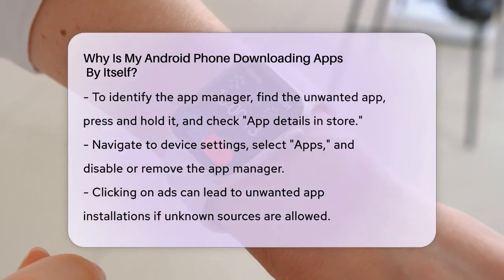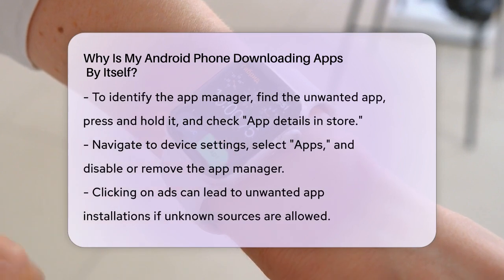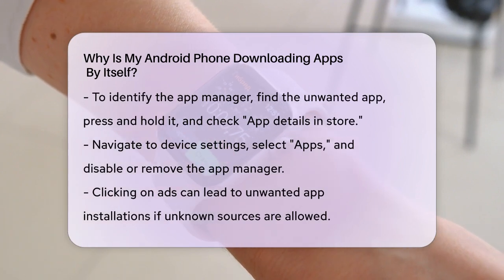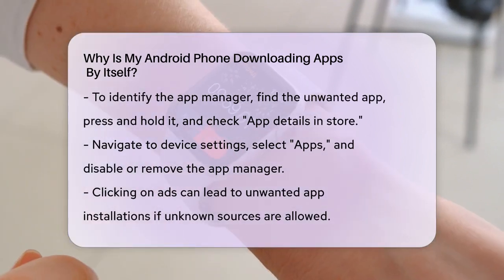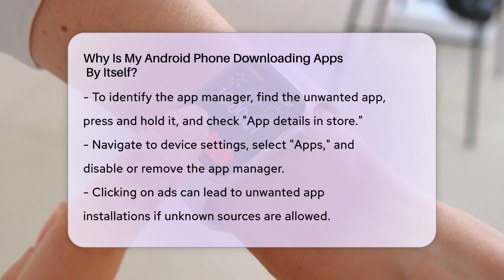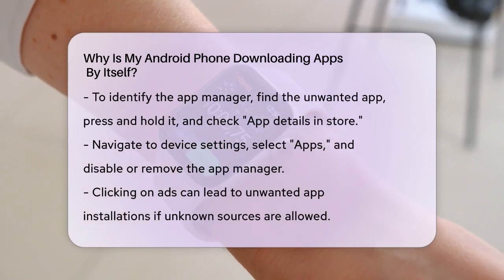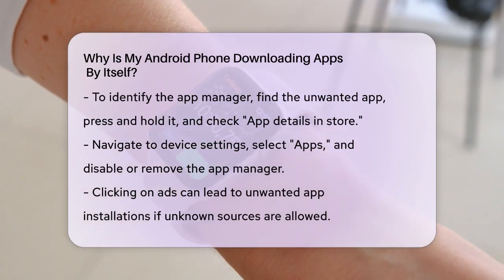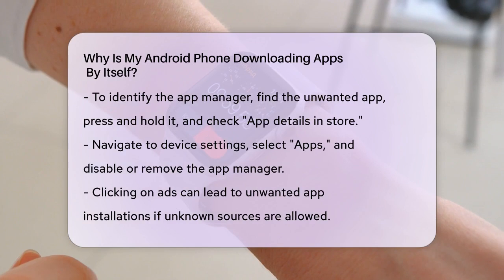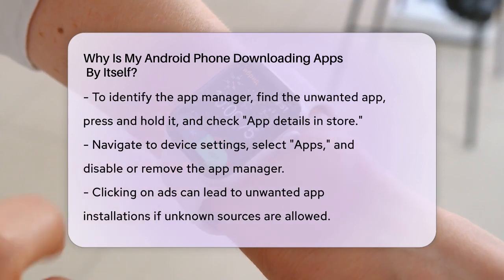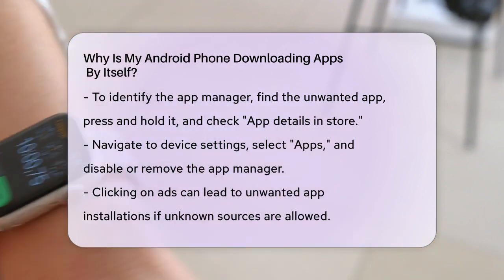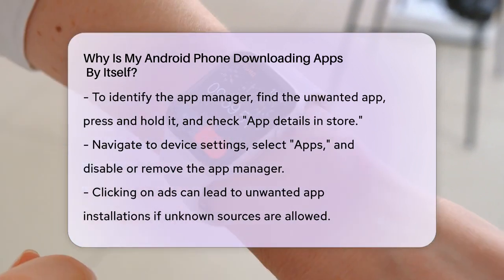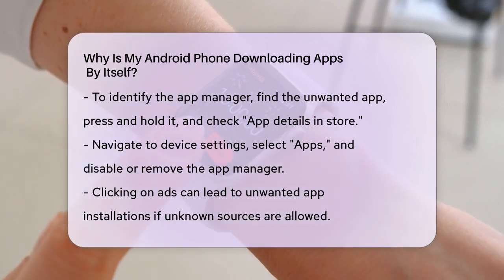Sometimes ads can also lead to unwanted app installations. If you've clicked on an ad and found an app installing afterwards, it might be due to settings that allow unknown sources to install apps. To prevent this, go to your device's settings, select Apps, then the three dots in the upper corner, and toggle off any unknown sources that are enabled.